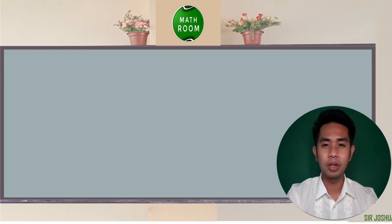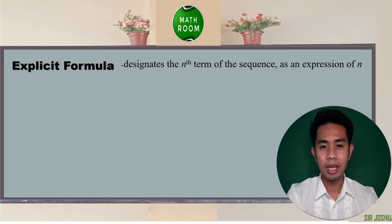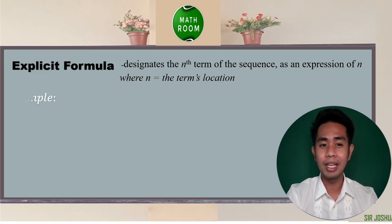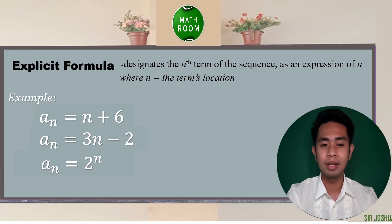Another way to solve each term in a sequence is using an explicit formula. An explicit formula designates the nth term of the sequence — it is an expression in n, where n is the term's location. Examples of explicit formulas are: a sub n equals n plus 6, a sub n equals 3n minus 2, and a sub n equals 2 raised to n.